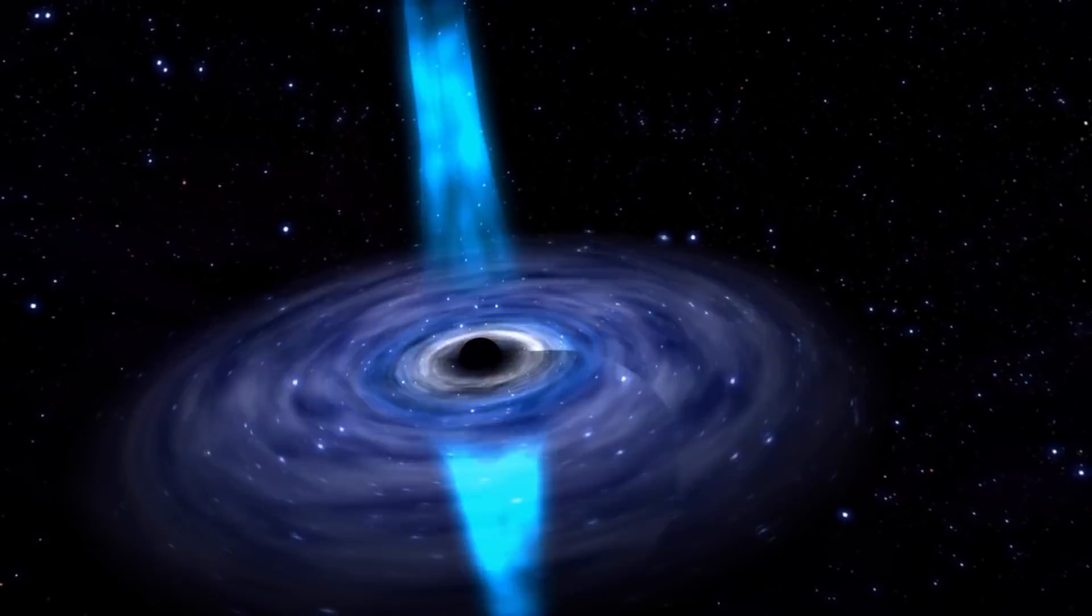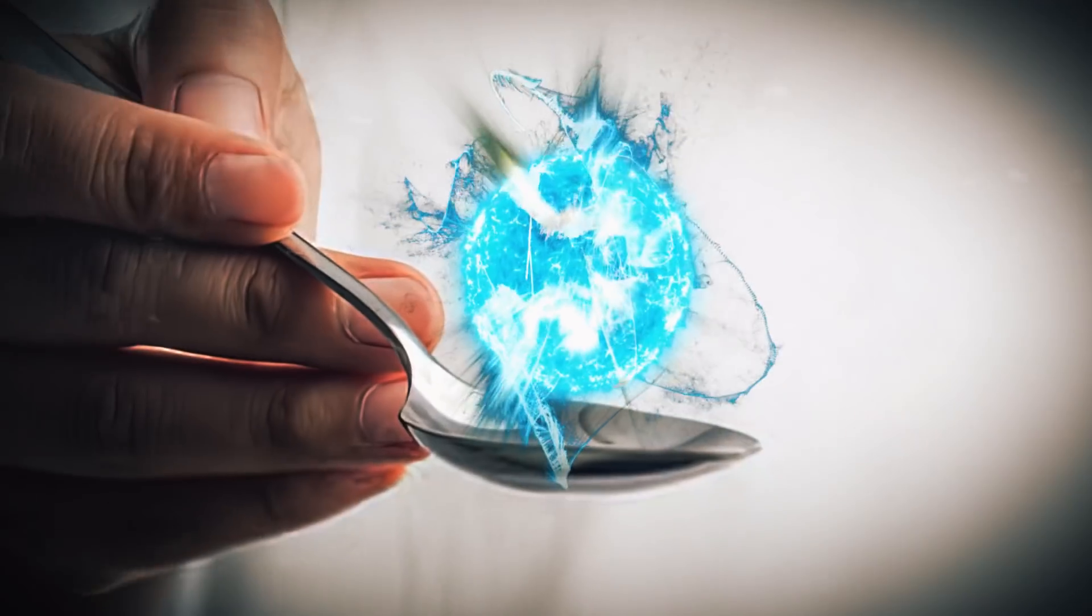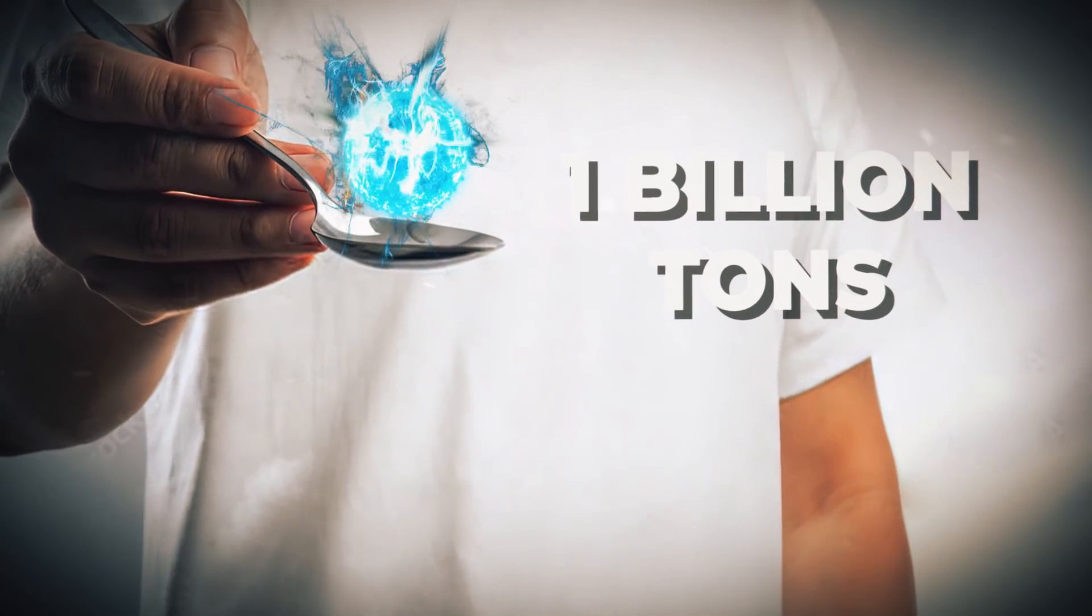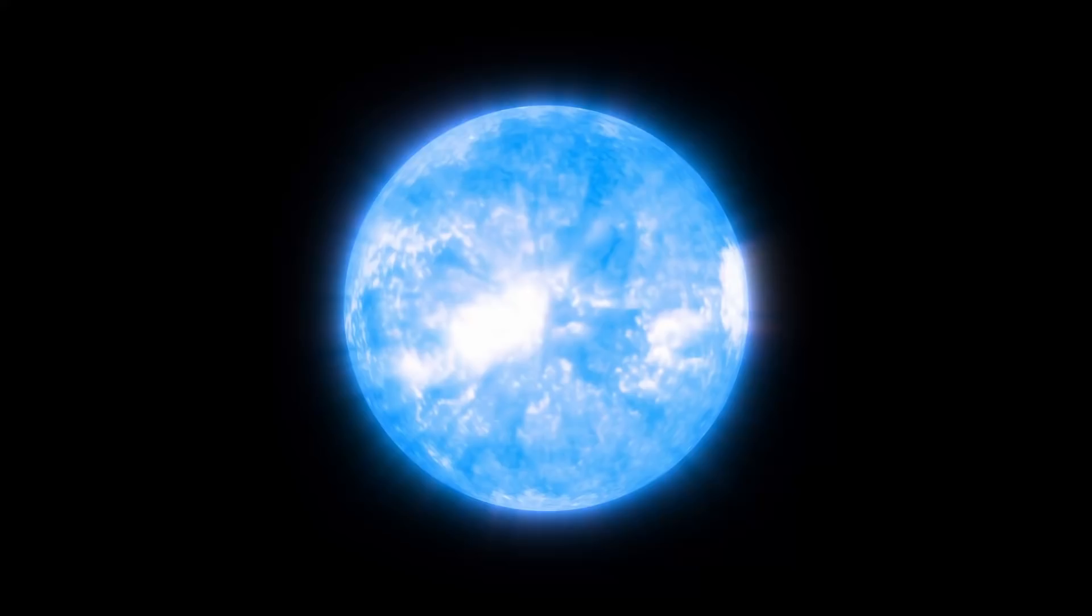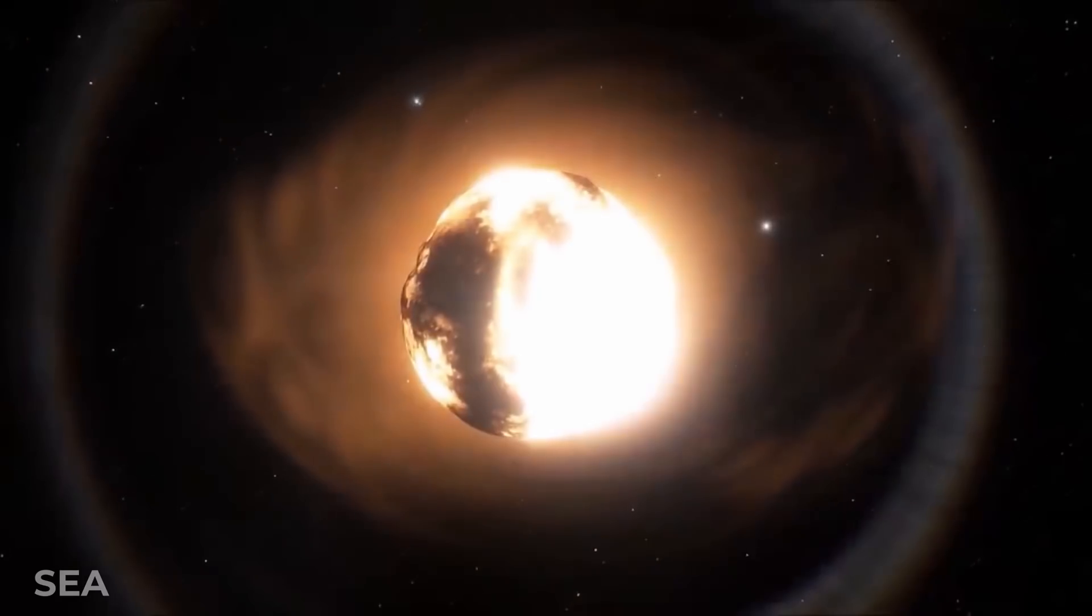Neutron stars are the densest objects in the universe. A tablespoon of neutron star material would weigh about 1 billion tons on Earth, according to NASA. As you may have guessed, it consists mainly of neutrons and is covered by a relatively thin shell. They pack quite a punch, but they are rather small bodies.